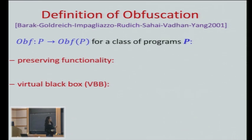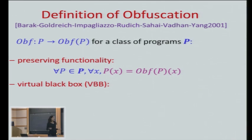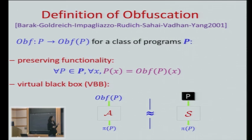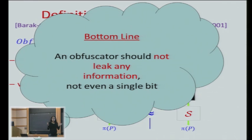More formally, what they required: first, it should preserve the functionality — exactly the same input-output behavior. And the security requirement they wanted is what they called Virtual Black Box, which essentially means whatever property pi of the code an efficient adversary can learn given the obfuscated code, can also be learned given only black-box access to the code. You can feed inputs and get outputs — which of course you can do given the obfuscation — and that's all you can do. Another simulator can learn the same predicate with essentially the same probability. The bottom line is: you don't learn anything — not even a single bit — beyond what you can learn from just running the code.